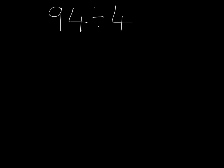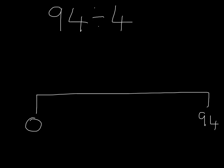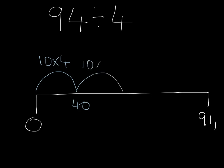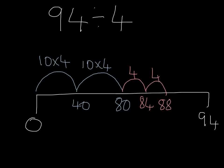One final one. 94 divided by 4. We start with our number line again. We do what we did before by chunking in groups of 10. 10 lots of 4 is 40. This time we can do the same again — another 10 lots of 4 is 80. And now we continue chunking in groups of 4, until going any further would take us over 94.